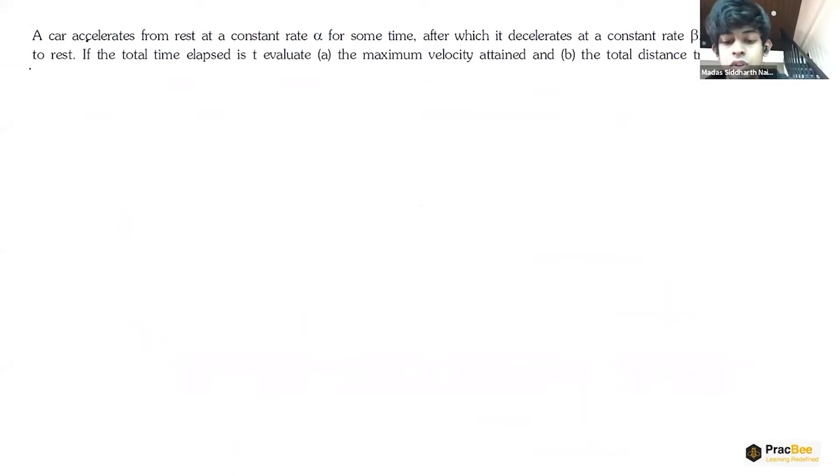So let us start with the question. We have a car which accelerates from rest at a constant rate alpha for some time, after which it decelerates at a constant rate beta to come to rest. If the time elapsed is t, the total time of the journey, you have to evaluate the maximum velocity attained by the car and the total distance traveled by the car.